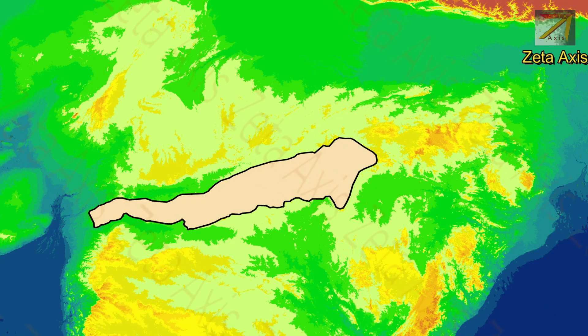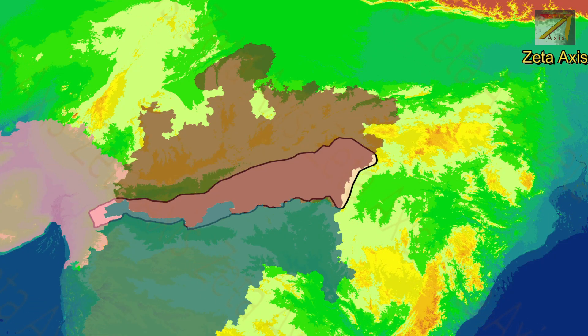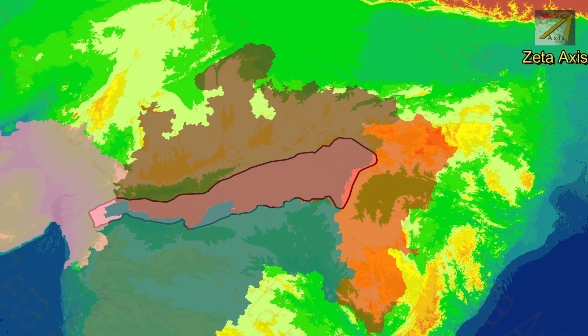The Satpura mountains rise in the south Gujarat region and run through Maharashtra and Madhya Pradesh till Chhattisgarh.